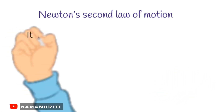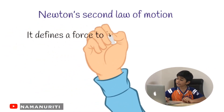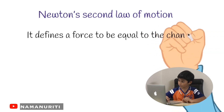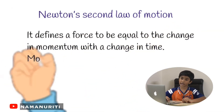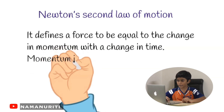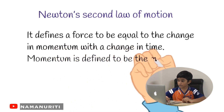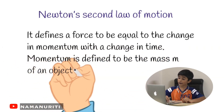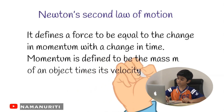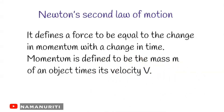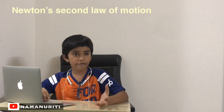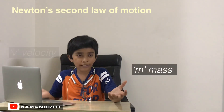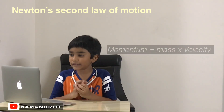Newton's second law of motion defines force to be equal to the change in momentum with a change in time. Momentum is defined to be the mass m of an object times its velocity v. So if you have m and v, the product of them is momentum.